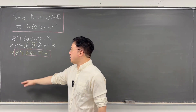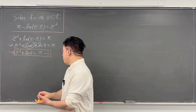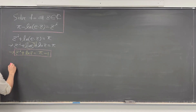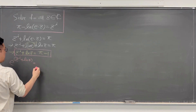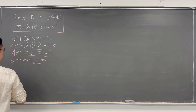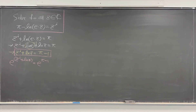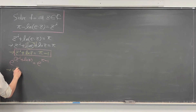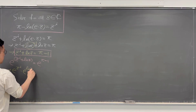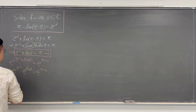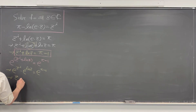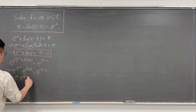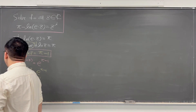Now let's apply e as the base to both sides. The left-hand side becomes e to the power of z^i plus ln z, equal to e to the power of pi minus 1. The left-hand side is the same as e to the power of z^i times e to the power of ln z. Since e to the power of ln z equals z, this simplifies to z times e to the power of z^i equals e to the power of pi minus 1.